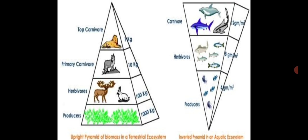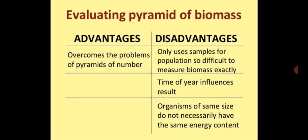This is shown in diagrammatic form — one shows the upright pyramid of biomass and another shows the inverted pyramid of aquatic ecosystem. The advantage of the pyramid of biomass is it overcomes the problems of pyramid of numbers — it is a better version. The disadvantages are: it only uses samples for population, making it difficult to measure biomass exactly; the time of year influences the result; and organisms of the same size do not necessarily have the same energy content.